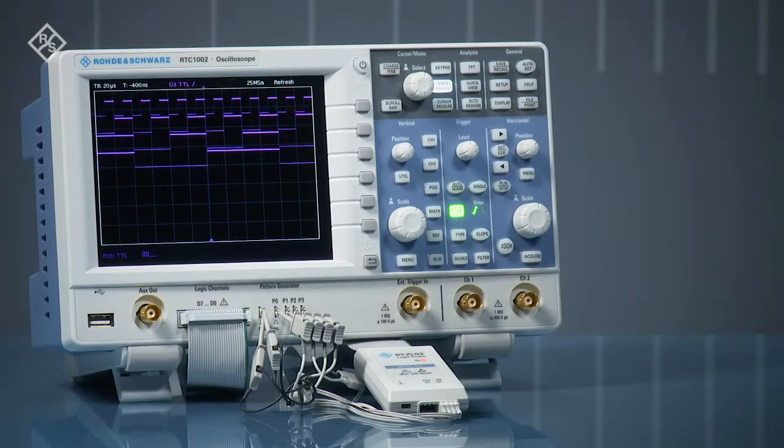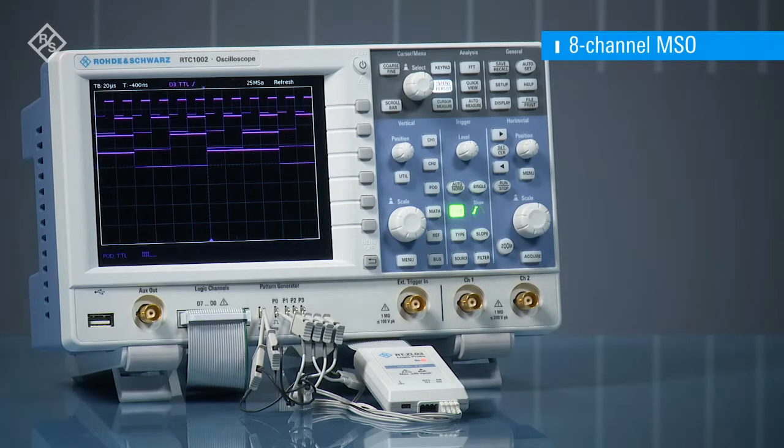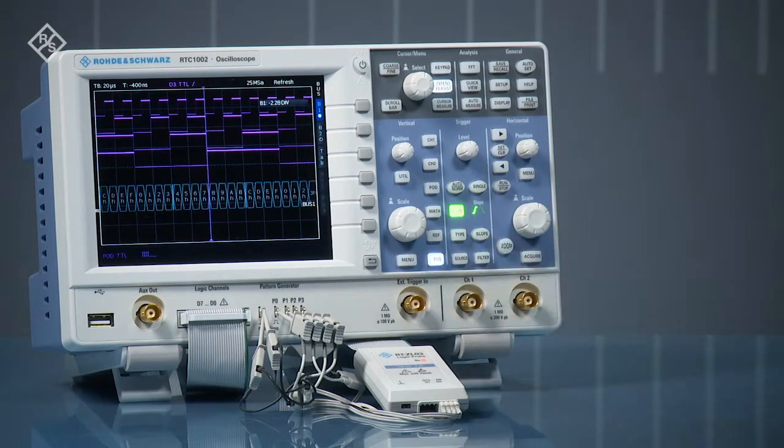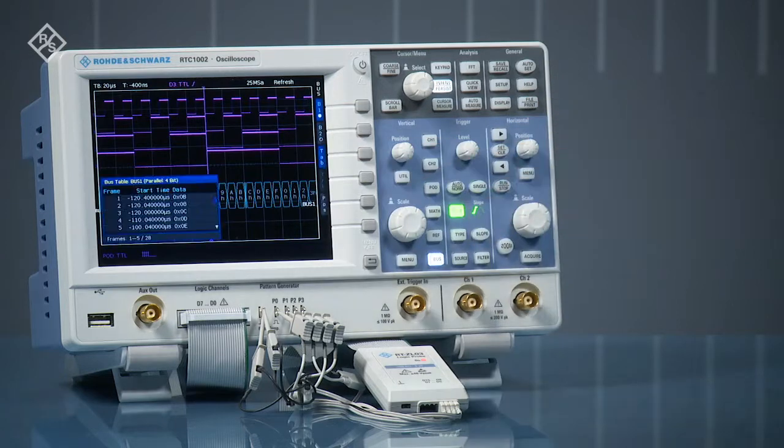RTC 1000 series oscilloscopes feature an 8-channel integrated logic analyzer option. Use the digital channels to see timing relationships. Group multiple signals into a bus and see bus values. Or view bus activity in a table complete with time tags.